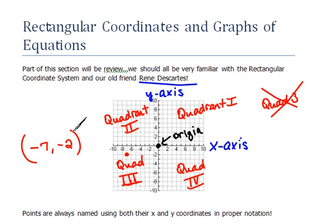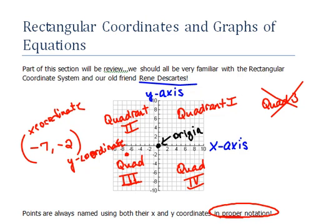This is point notation. It is using the x-coordinate and also the y-coordinate of the point. It is extremely important that you use proper notation and that you label points using both their x part and their y part.